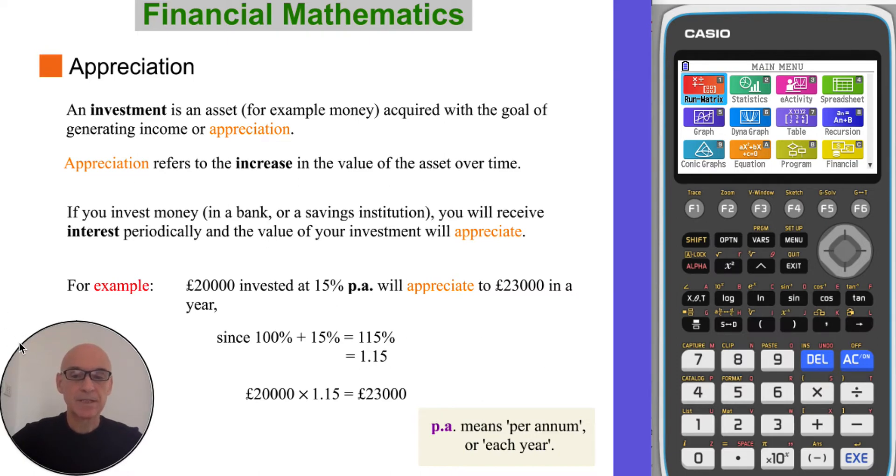For example, £20,000 invested at 15% PA, which means per annum or each year, will appreciate to £23,000 in a year, as shown in the calculation here.